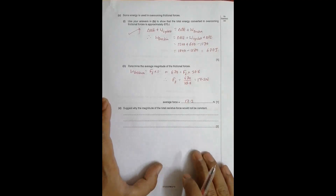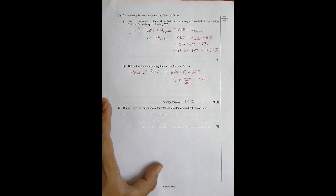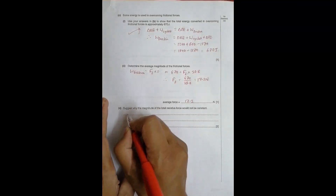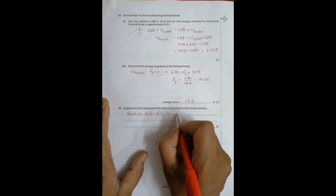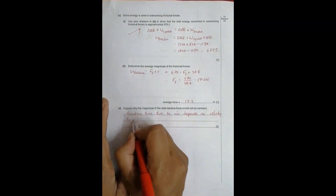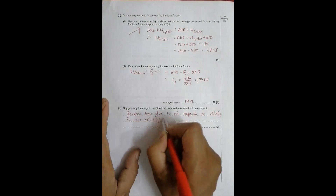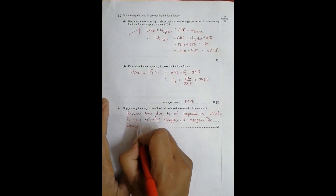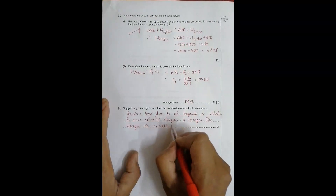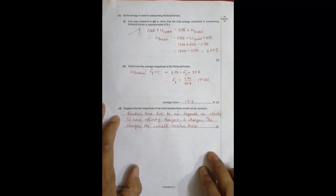The last question asks why the magnitude of the total resistive force would not be constant. The resistive force includes friction on the surface and air resistance. The resistive force due to air depends on velocity, and since velocity changes throughout the motion, the air resistance changes, and therefore the overall resistive force is not constant. This completes the solution to this classic and standard problem.